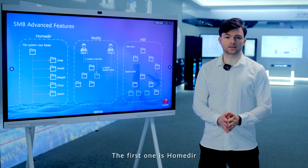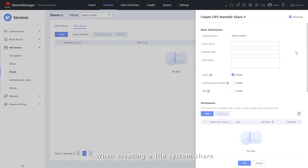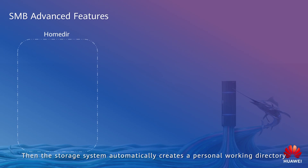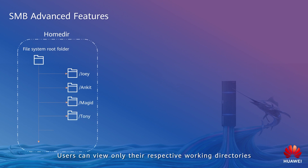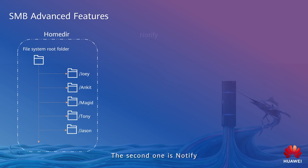The first advanced feature is Home Directory. When creating a file system share, we can specify it as a Home Directory share. Then the storage system automatically creates a personal working directory for each user who accesses the file. Users can view only their respective working directories. Home Directory can be used to quickly create file shares similar to personal web disks, which are mainly used in file office scenarios.